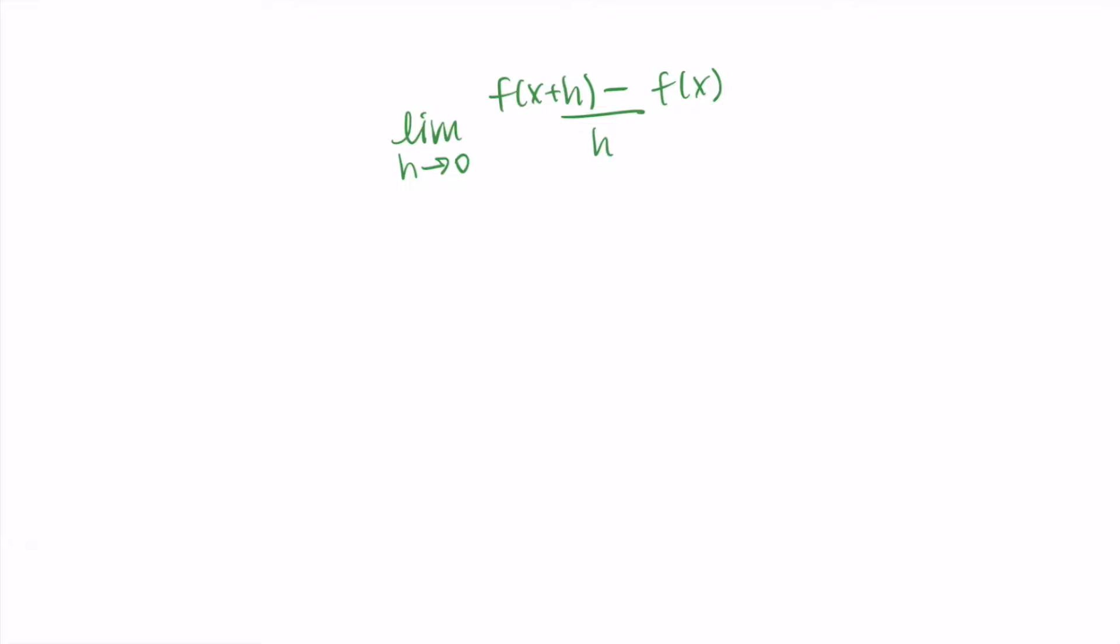We're sending h to zero to get as close to that tangent line as possible, and using the limit allows us to get to the tangent line.